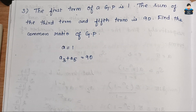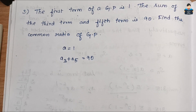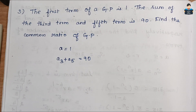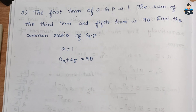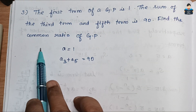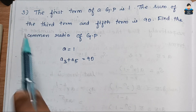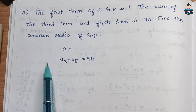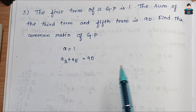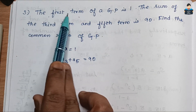Hello everyone, welcome to our channel. In this video we look at Class 11 NCRT Chapter 9, Sequence and Series, miscellaneous exercise. In the new edition book it is Chapter 8, Sequence and Series. This is the third question — we look at the sums in order.